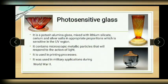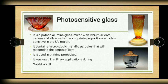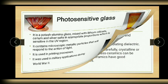The next one is photosensitive glass. The name itself suggests it is sensitive to light, particularly UV light. It is a potash alumina glass mixed with lithium silicate, cerium, and silver salts in appropriate proportions. It is like traditional camera film — it contains microscopic metallic particles that respond to the action of light, leading to the development of an image in the glass. It was used by military forces during the 2nd World War for sending secret messages, and it is used in printing processes also.